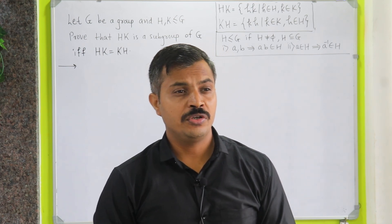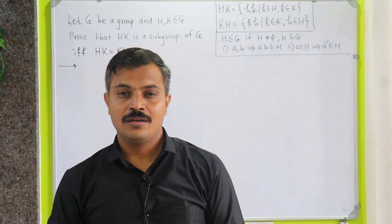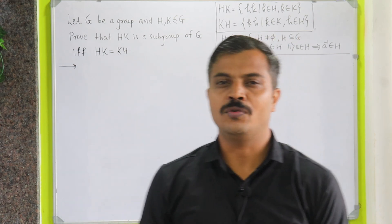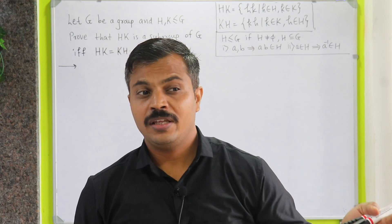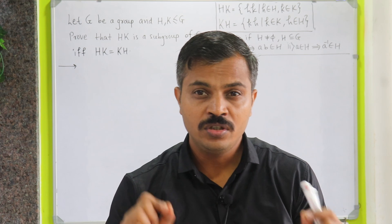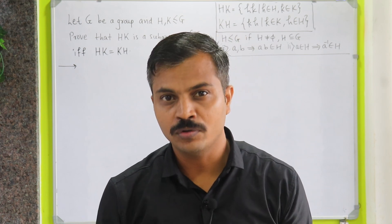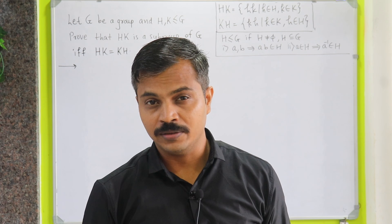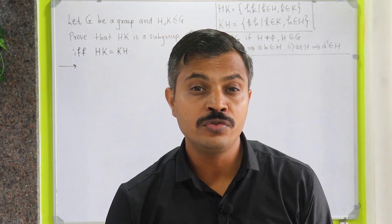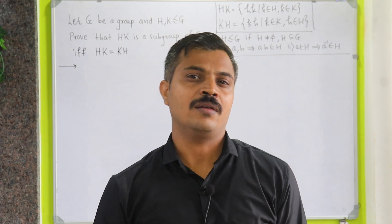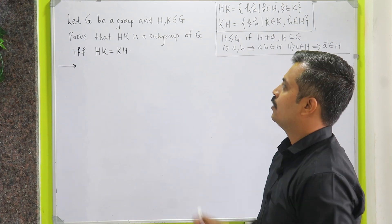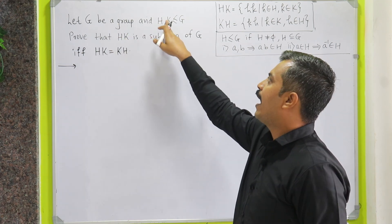In this class we are going to see when the product of two subgroups will be a subgroup. We have already discussed earlier that intersection of two subgroups is always a subgroup, and union of two subgroups is a subgroup if and only if one is a subset of the other. Now the question is: when will the product of two subgroups be a subgroup? The answer lies in today's theorem.